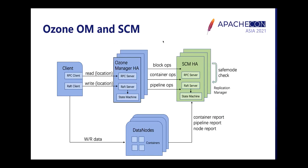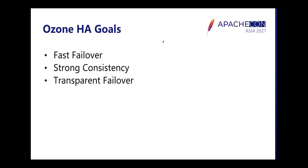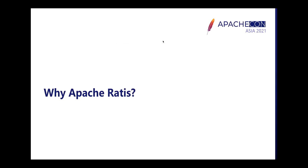This is why implementing Ozone HA in 2020 and 2021 was a priority. Ozone HA's goals are: first, a fast failover process; second, strong consistency especially around metadata; and third, transparent failover for the entire Ozone cluster. We'll now have Shashik introduce Apache RATIS, which is used for implementing Ozone HA overall.